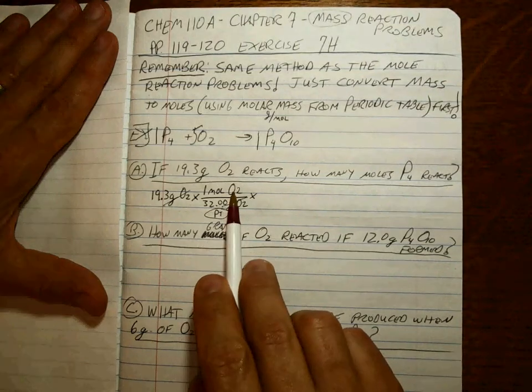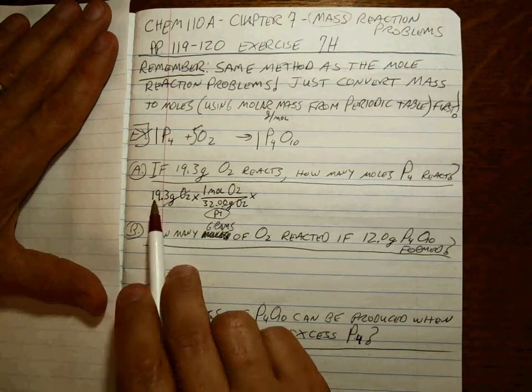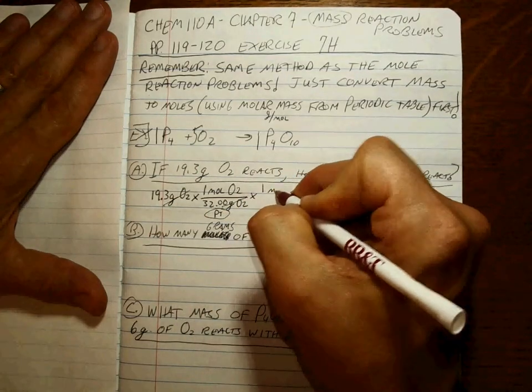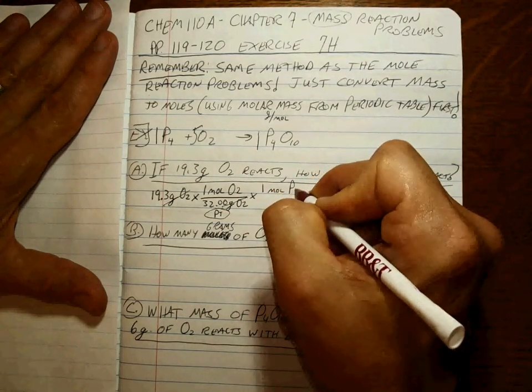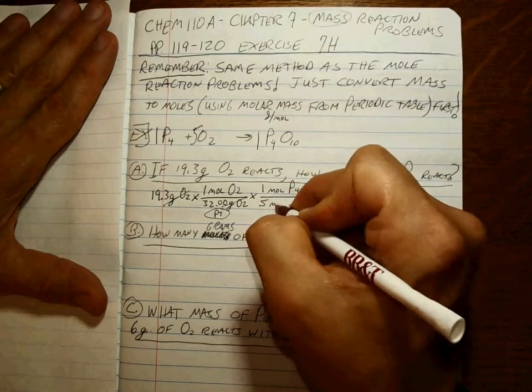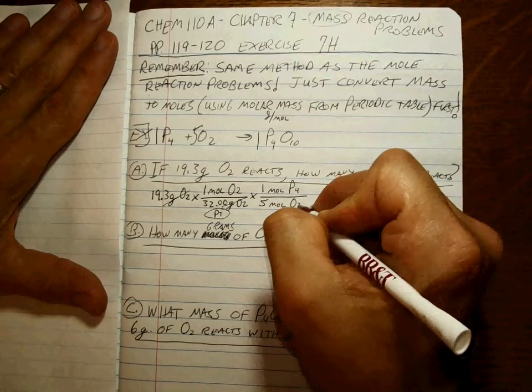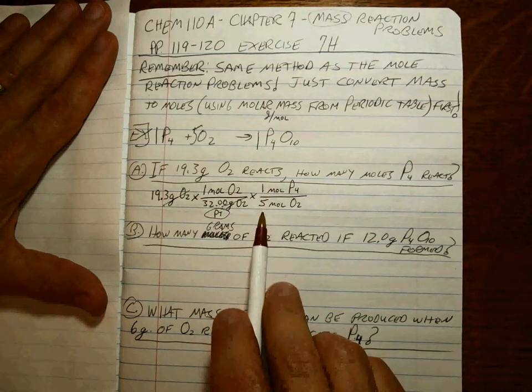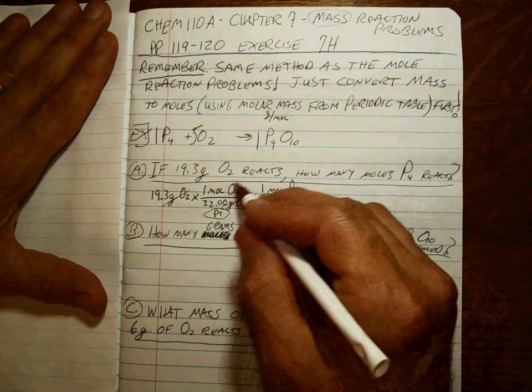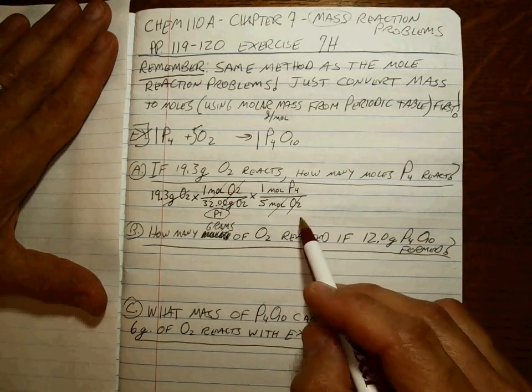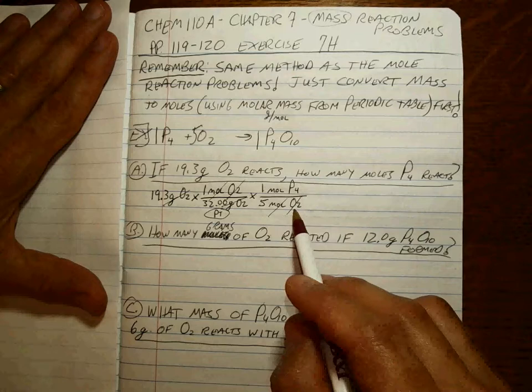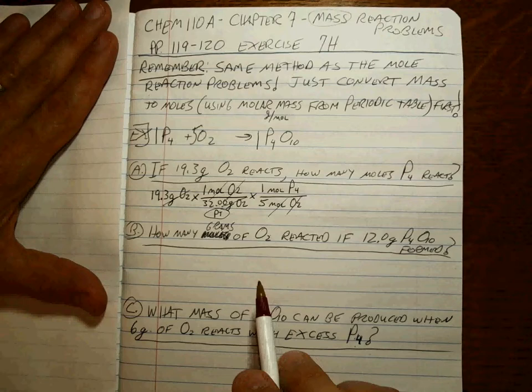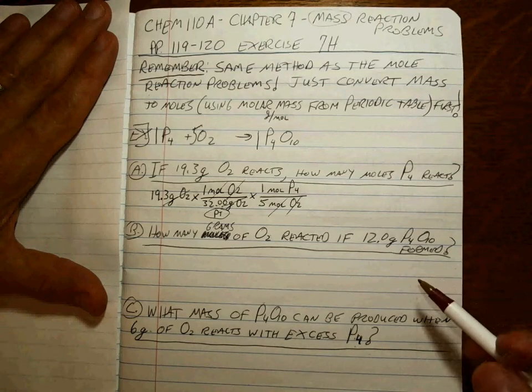Once we're at moles of O2 from this many grams, we can now do that mole-to-mole ratio of the balanced equation. There's one mole of P4 for every five moles of O2. If you don't write in the O2, you'd be tempted to have the five on top and the one on the bottom. You'd never do that if you write those in because the only way you can cancel those O2s out is this way.